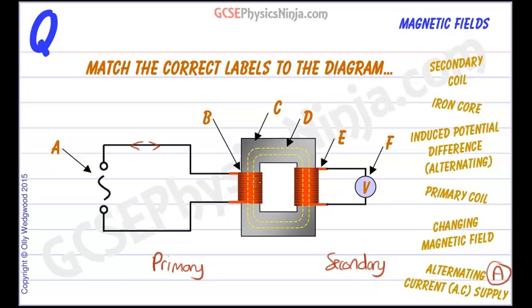50 times a second that current changes direction, and you know that when a current flows in a wire it creates a magnetic field. When a current flows in a coil it also creates a magnetic field. So 50 times a second we are creating a magnetic field, this yellow dotted line, which is contained within an iron core.